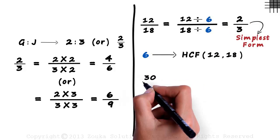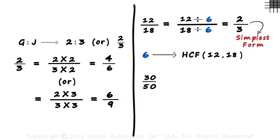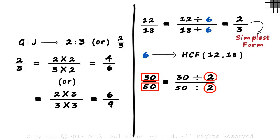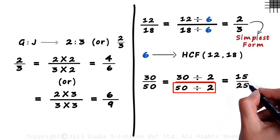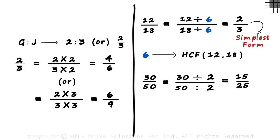Say we have the ratio 30 by 50. Let's assume that we do not know what their HCF is. All we need to do is look for the common factors of the numerator and the denominator. 30 and 50 are both divisible by 2, so we divide the numerator as well as the denominator by 2. 30 divided by 2 is 15 and 50 divided by 2 is 25. If there are no common factors of the numerator and the denominator, it leaves us with the answer in simplest form. But 15 and 25 both have 5 as their common factor, which tells us that this is not the simplest form.